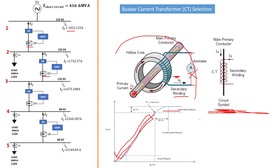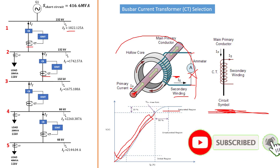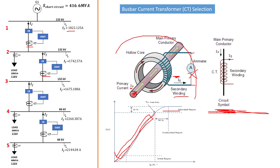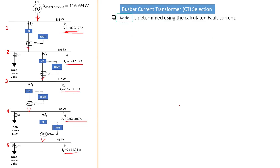That's what we call a saturation region — when the current transformer gets to that point, it becomes useless because it's not protecting anymore. So the purpose of protection is to ensure that as soon as we get out of the linear region and reach the knee-point voltage, your system must have already tripped to provide protection. We then move on to determine the turn ratio for our transformer, which must be according to the magnitude of the fault current on each of these bus bars. Our current transformer ratio must be determined using the calculated fault current on each bus bar.